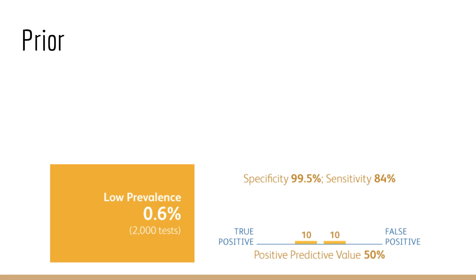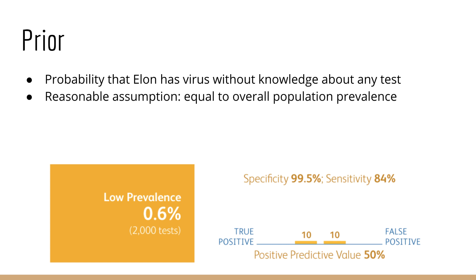Another quantity we are interested in is the prior. This is the probability that Elon Musk has COVID without any knowledge from any test. A reasonable assumption would be that this is equal to the overall prevalence of the virus amongst the population. Of course, this is not a number that we actually know and would be quite hard to estimate. We have numbers like the amount of new cases per day and the total population, but we also have to account for the fact that people recover and also that many asymptomatic people will not get tested. So, one way you can think of this number is that it's a parameter to this problem, and then you can check how the answer varies using different values.